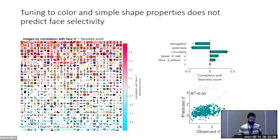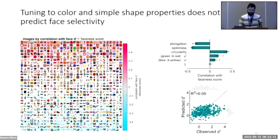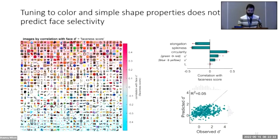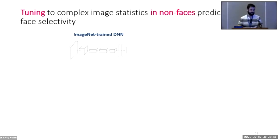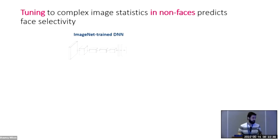What explains this link between the response structure for non-face objects and face selectivity? We found that tuning to color and simple shape properties didn't predict face selectivity. Face-selective neural sites tended to respond more strongly to rounder, less elongated, and more tan or reddish objects, and when we quantified these intuitive properties we confirmed a relation to face cell responses — but overall, neural tuning to these properties was not predictive of face selectivity.